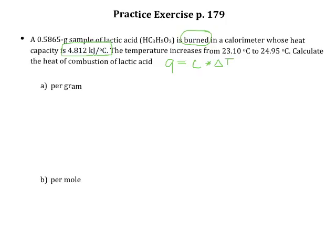So pretty straightforward here. They're asking us the heat of combustion of lactic acid and they're asking us in two different unit types, per gram and per mole. So the first thing we're going to need to do is figure out what that heat of combustion is. So we're just going to use that equation, Q equals the heat capacity, which is 4.812 kilojoules per degree C, and we're going to multiply that by the change in temperature, which is T final minus T initial.